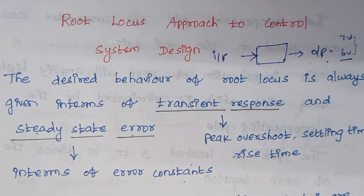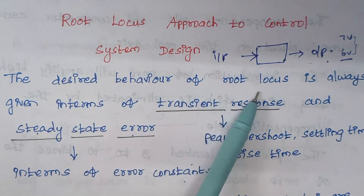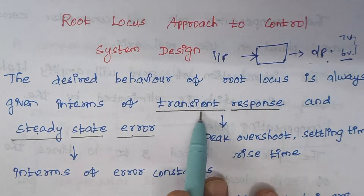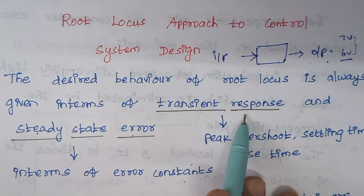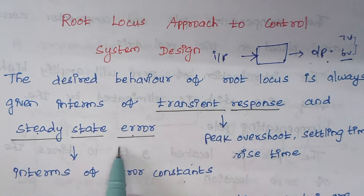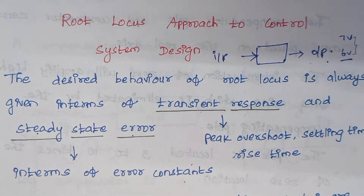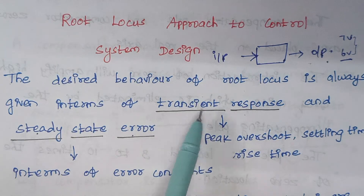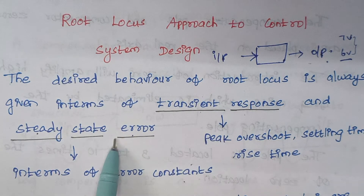The desired behavior of a root locus is always expressed in terms of transient response and steady state error. That is, the performance of a root locus is always expressed in terms of these two terms: transient response and steady state error.